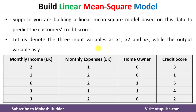In this case, we have been given a dataset with three input variables. The first one is monthly income, the second one is monthly expenses, and the third one is homeowner. They are represented with x1, x2, and x3. Credit score is the output variable, represented with y.